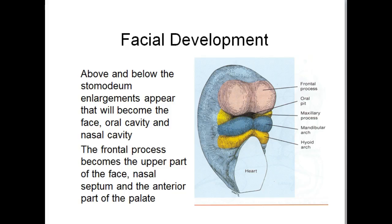Above and below the stomodeum, enlargements appear that will become the face, the oral cavity, and the nasal cavity. The frontal process, shown here in pink, becomes the upper part of the face, the nasal septum, and the anterior part of the palate.